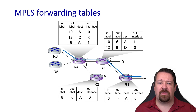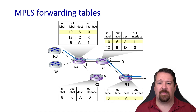The labels themselves change as routers forward them. For the path shown, we have label 10 going out interface 0 on R4, and when a label 10 packet arrives at R3, it gets assigned label 6 and forwarded out interface 1. Then when a packet with label 6 arrives at R1, that's the egress from the MPLS network, so it removes the label and forwards it out interface 0.